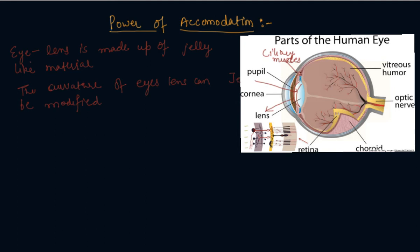When the muscles are relaxed, the lens becomes thin. So the lens will look like this. Thus its focal length increases. So the focal length increases, F increases when ciliary muscles are relaxed. This enables us to see the distant object.